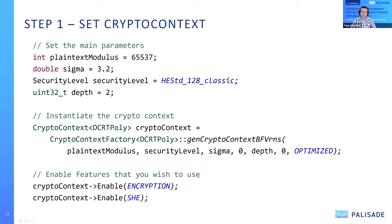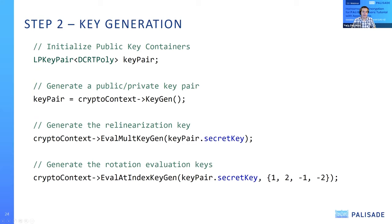Once the crypto context is created, we need to enable certain features — groups of operations that are supported. In this case we enable encryption and SHE (somewhat homomorphic encryption) operations, since all we're doing is addition, multiplication, and rotations. Then comes key generation: we create a key pair using the KeyGen method, which creates a public and private key pair. For multiplication and rotation, we need special auxiliary public keys called evaluation keys — for multiplication, this is often called the relinearization key.